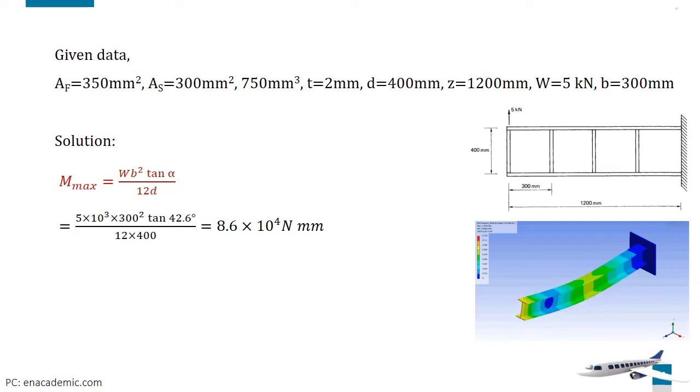Substitute the appropriate values and simplify. We have the maximum bending moment is 8.6 × 10⁴ Nmm. The maximum compressive stress corresponding to this bending moment occurs at the lower extremity of the flange and it depends on the elastic section modulus of each flange.